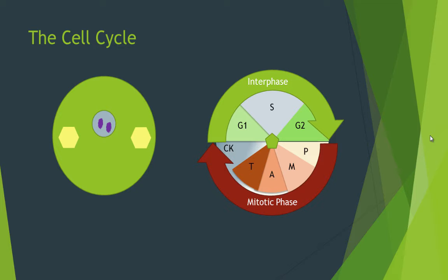Mitosis is defined as the process of dividing the nucleus into two daughter nuclei. Cytokinesis is the process of splitting the cytoplasm in one cell, creating two cells.